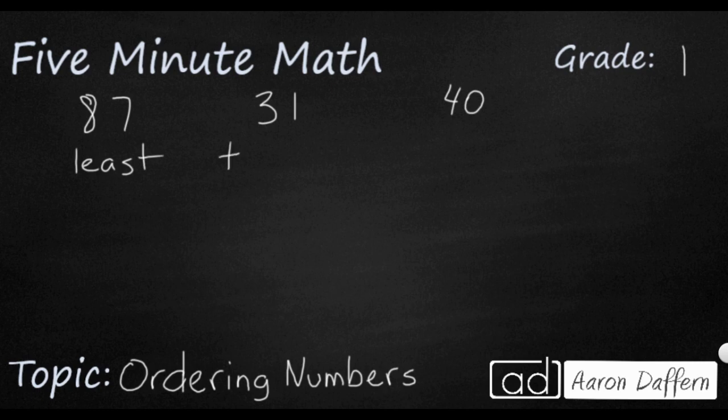So when we're looking at least to greatest, that means we're going to put our smallest number first, and then our biggest number last. So we can first do it without an open number line, and then we'll go back and look at what an open number line looks like. So when we're looking at these three numbers, we need to look at the largest place value of each number.